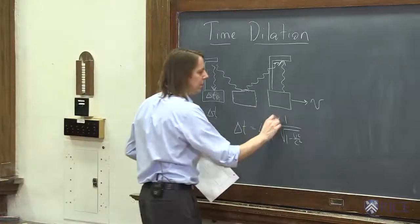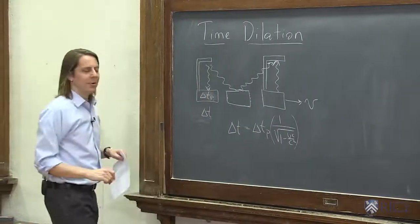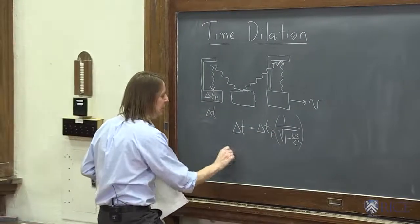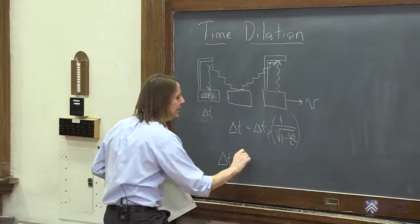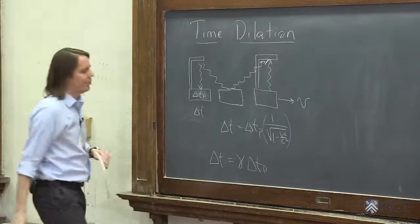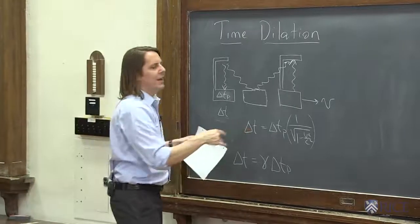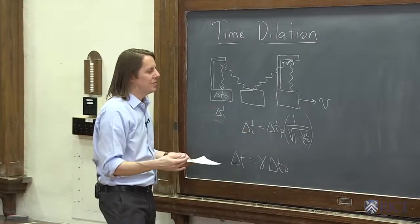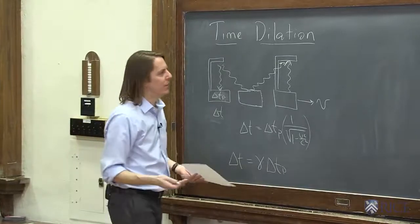So this term is sometimes just written gamma. You can write it as delta T is gamma times delta Tp, the proper frame, where gamma is that, and the reason we don't really notice this is because gamma, for everything we experience, is very close to one.